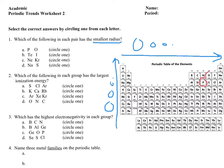Looking at phosphorus and oxygen: oxygen is not only above phosphorus but over to the right, so oxygen is definitely going to be your smallest. For tellurium and iodine, as we go to the right we get smaller, so iodine is going to be smaller.